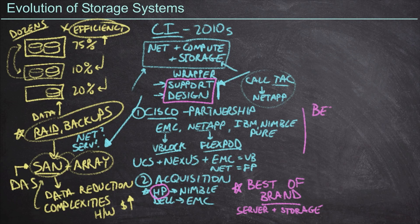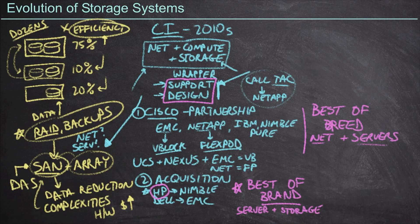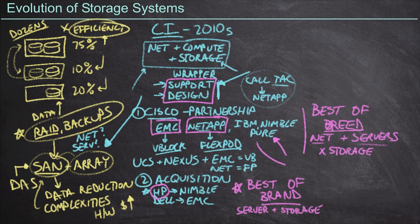Cisco calls their own approach 'best of breed.' They're suggesting they have the best networking and the best servers — specifically Cisco data center networking and Cisco UCS. But they recognize they don't have a storage product. So rather than just taking the best Cisco has to offer, the idea is to go out and get the best storage array available — from vendors like NetApp or EMC. That combination — best Cisco networking, best Cisco servers, and the best storage array you can find — is why it's called best of breed. You install that best-of-breed storage array into the Cisco converged infrastructure solution.